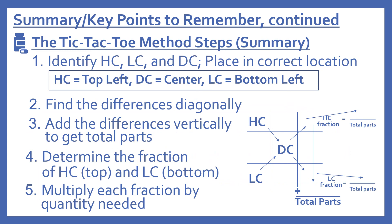Summary for the tic-tac-toe method: identify the high concentration, low concentration, and desired concentration, and place them in the correct location in the tic-tac-toe grid — high concentration in the top left, desired concentration in the center, low concentration in the bottom left. Find the differences diagonally, write those numbers in the grid, then add the differences vertically to get the total parts. Determine the fraction for high concentration — HC amount over total parts — and for low concentration — LC amount over total parts. Multiply each fraction by the quantity needed, which is specified in the problem.